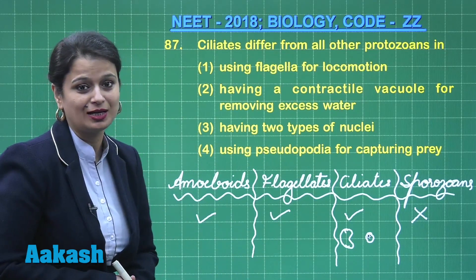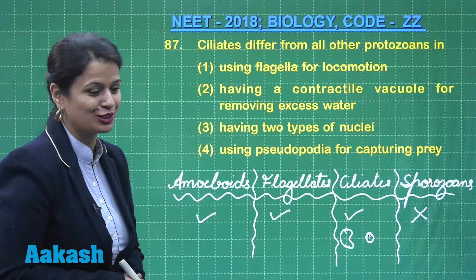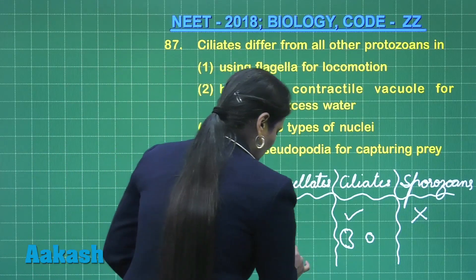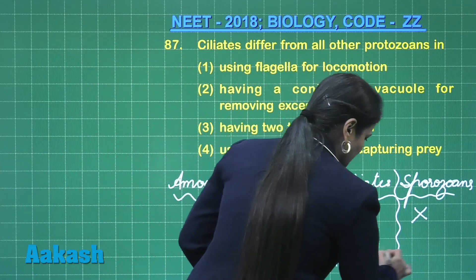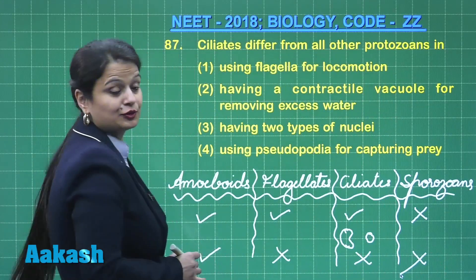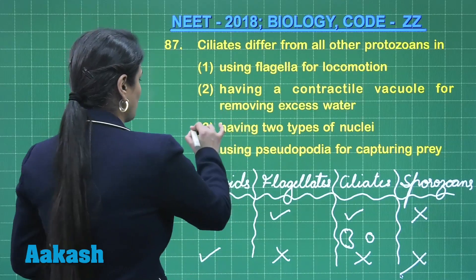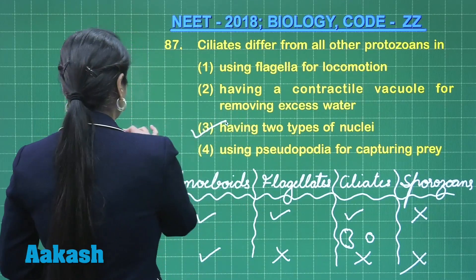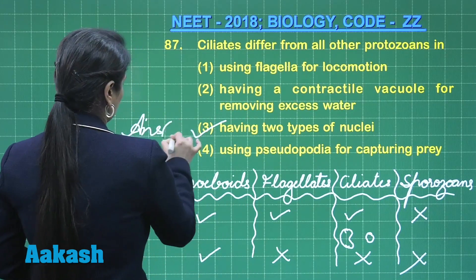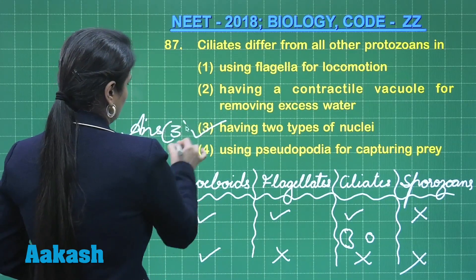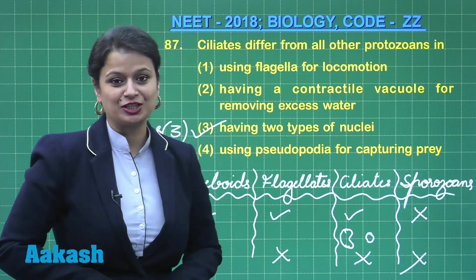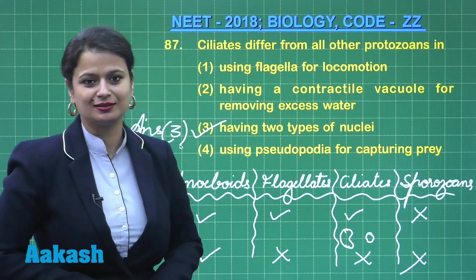Using pseudopodia for capturing: pseudopodia are only produced in amoeboids and are absent in ciliates. So the right answer for this question is option number 3.